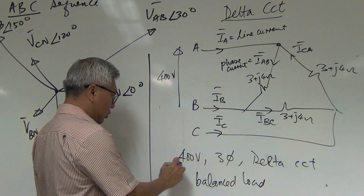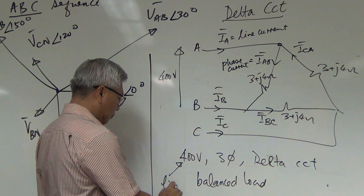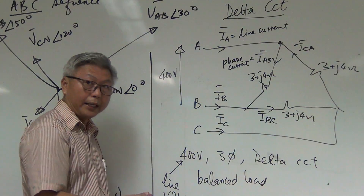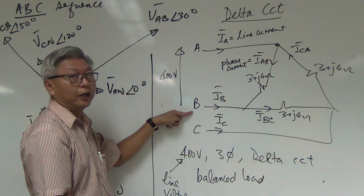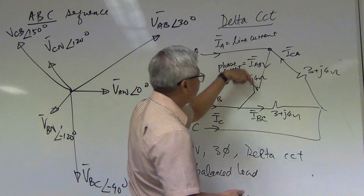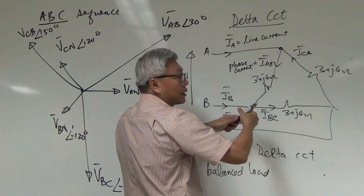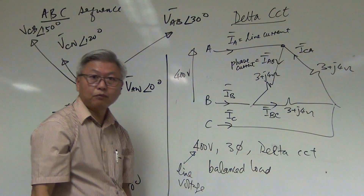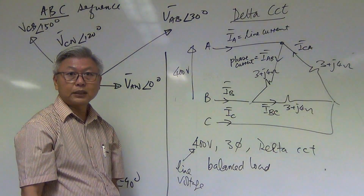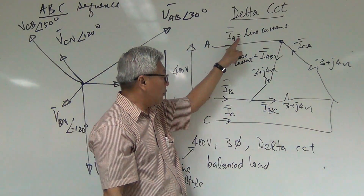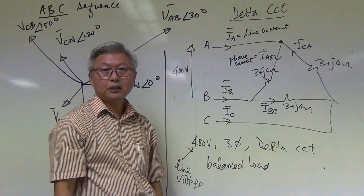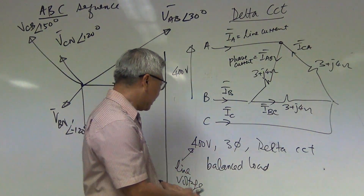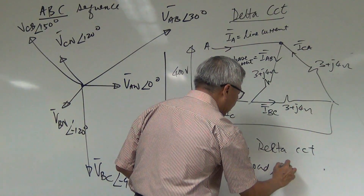The voltage is 400 volts as the question states. Remember, 400 volts is the line voltage — the voltage between two lines — so Vab is 400 volts. The phase voltage and the line voltage are the same for a delta circuit, whereas the line current and the phase current are different. Let's do the mathematics on this circuit working on ABC sequence.